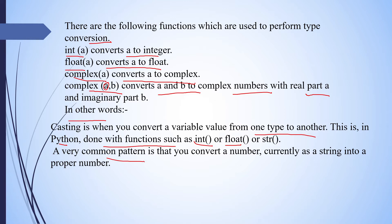A very common pattern is that you convert a number which is currently stored as a string into a proper number. When we input something it comes in as a string, so to convert it we have to wrap it — for example int(input('enter a number')). We will also see the input function, but first let's see how to convert from one data type to another, meaning type casting.